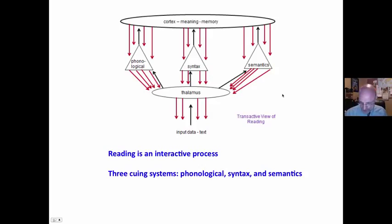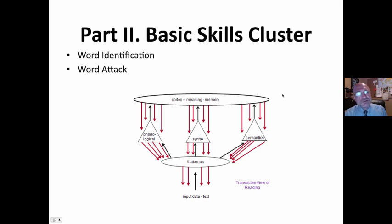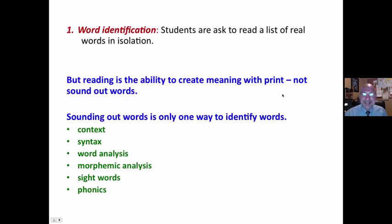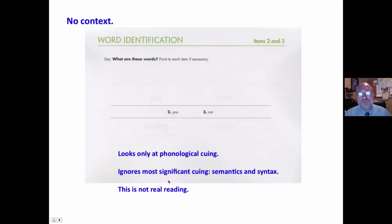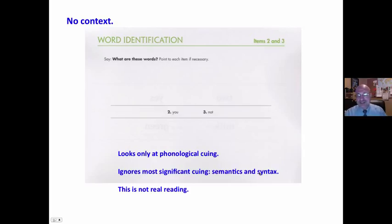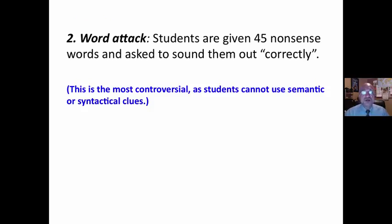The basic skills cluster: word identification and word attack. Students are asked to read a list of real words in isolation. But reading is creating meaning with print. Sounding out words is only one way to identify words — there are six ways. If you see a word in isolation, you're looking at only phonological cueing, not the most efficient cueing system — the semantics and syntax. This is not real reading. Identifying and sounding out words in isolation is not real reading. It provides no context.